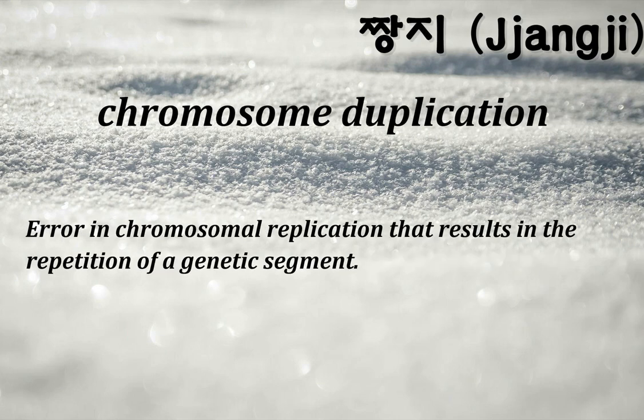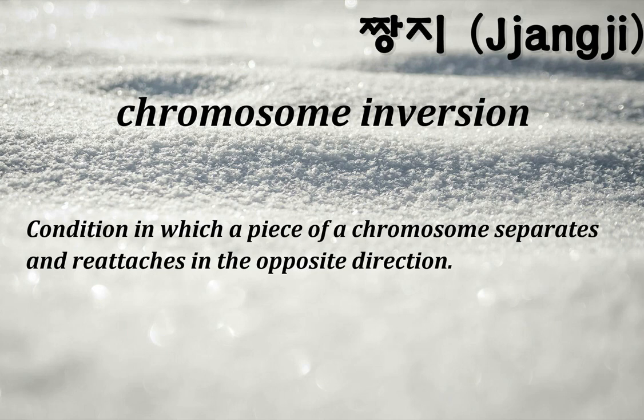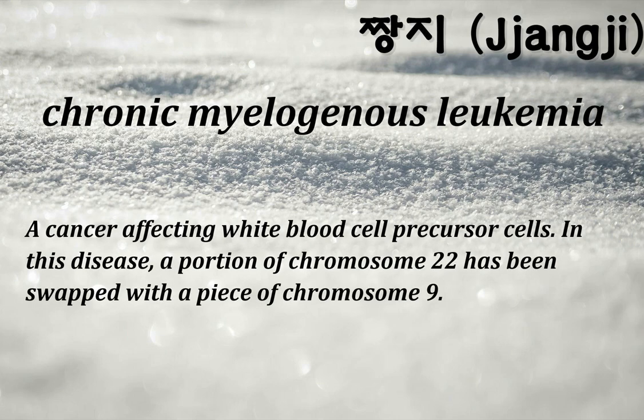Chromosome duplication: an error in chromosomal replication that results in the repetition of a genetic segment. Chromosome inversion: condition in which a piece of a chromosome separates and reattaches in the opposite direction. Chronic myelogenous leukemia: a cancer affecting white blood cell precursor cells; in this disease, a portion of chromosome 22 has been swapped with a piece of chromosome 9.